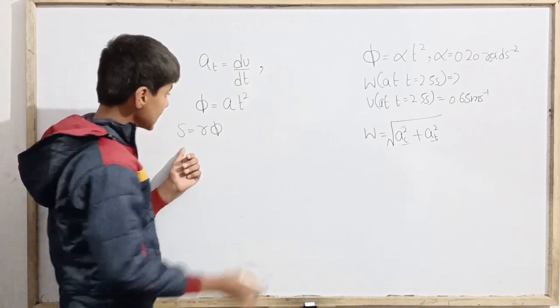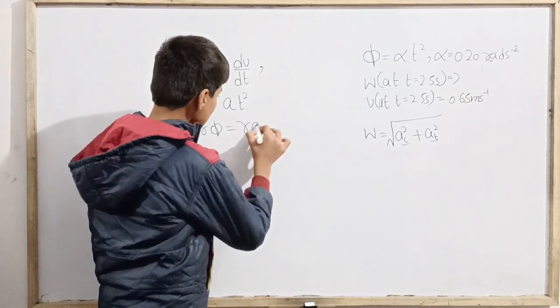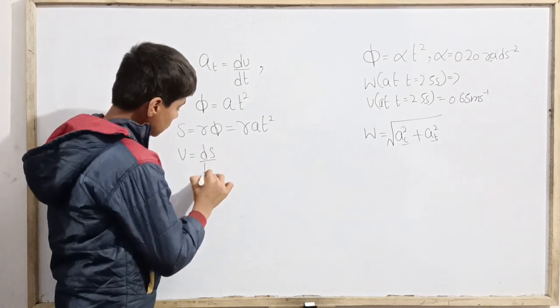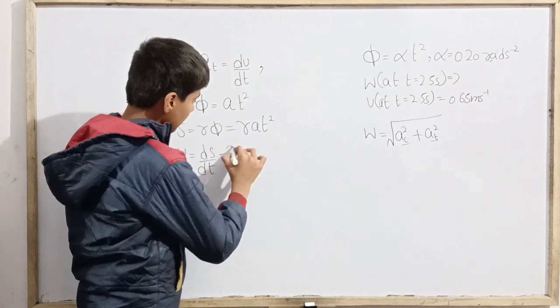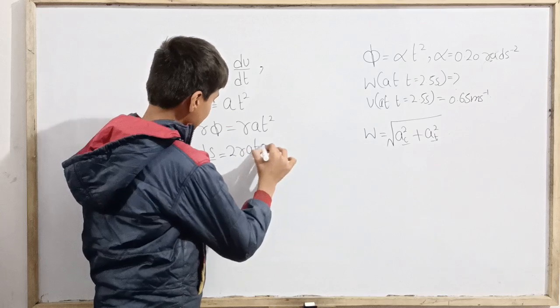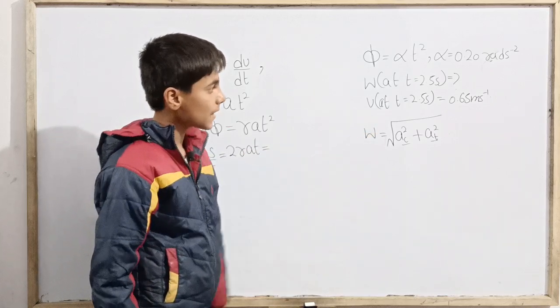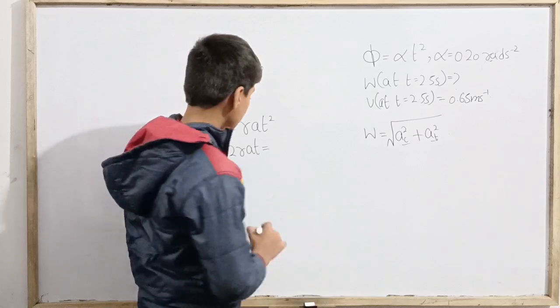So r times at squared. From here, v since is ds over dt, this becomes 2rat at t equals 2.5, that is 2.5 seconds. This is 0.65 meter per second.